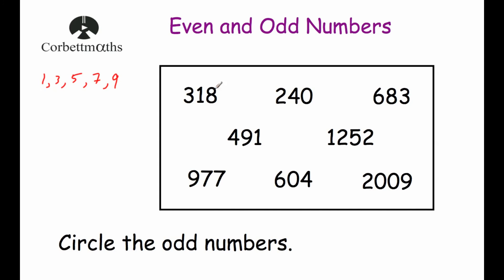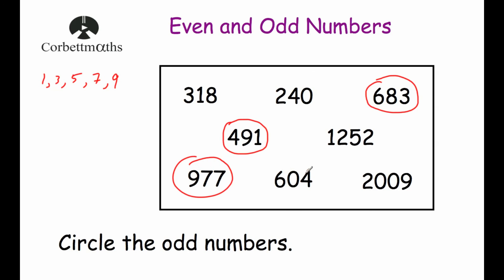So 318 ends in an 8, so that's even. 240 ends in a 0, so that's even. 683 ends in a 3, so that number is odd. 491 is going to be odd because it ends in a 1. 1,252 ends in a 2, so that's even. 977 ends in a 7, so that's odd. 604 ends in a 4, so that's even. And 2009 ends in a 9, so that means that number is odd — we were to circle it.